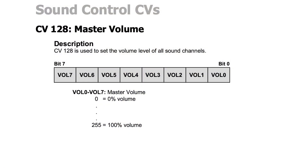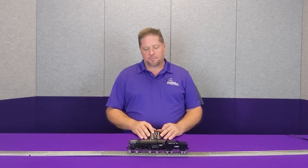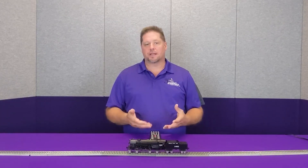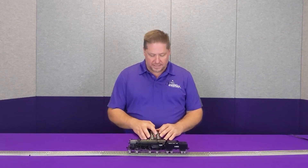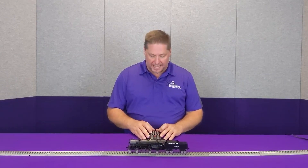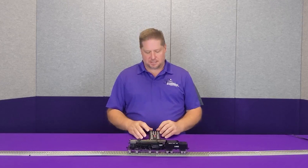Now I can take the master volume and adjust the sound all the way up. CV 128 is where my master volume lives. I can turn this all the way up to 255, where you can hear that blower get a little bit louder, or we can adjust it down — setting CV 128 to a value of 100 — and again you can hear how that volume has decreased.